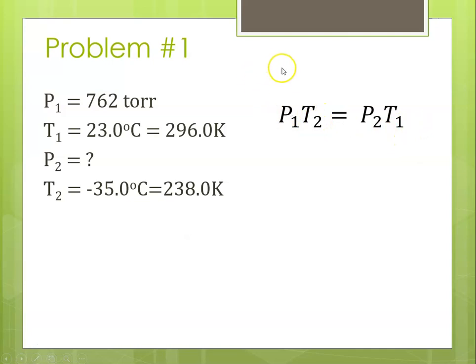Recall that the gas law can be written as P1 over T1 equals P2 over T2. So by cross-multiplying, we get P1 T2 equals P2 T1. Solving for P2, it's equal to P1 T2 over T1.